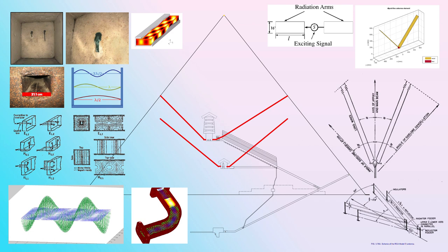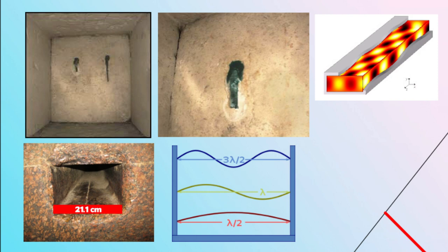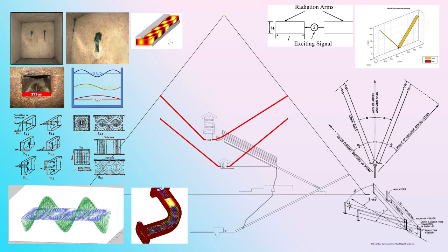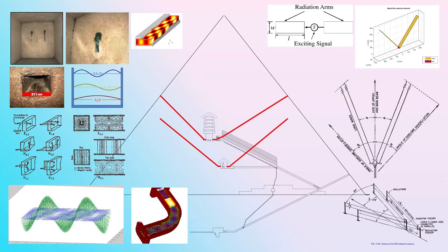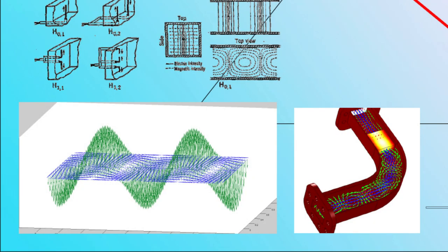The thing that really gave this whole theory away to me was these two structures in the pyramid — the so-called air shafts or star shafts. A different researcher pointed out they are 21.1 centimeters wide, which is really special in radio astronomy. They kind of remind me of rabbit-ears TV antenna, and having a 21.1 centimeter wide shaft is a perfect representation of a waveguide — the same technology we use in radio astronomy.